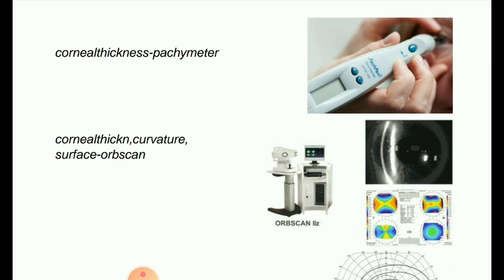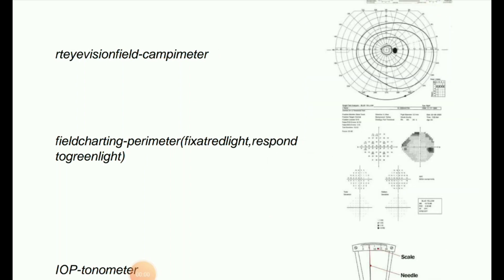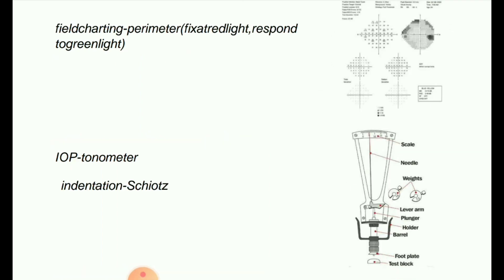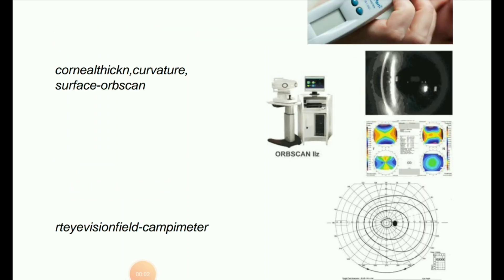Next image: specular pachymeter, which helps us to know the thickness of the cornea. Next image: corneal thickness, curvature, and surface — Orbscan, as seen in the image. Next image: right eye visual field — campimeter field charting, perimeter, which uses a fixed red light response to green light. Intraocular pressure — tonometer. I hope you already watched part one and part two. Thank you for watching.